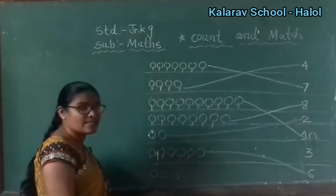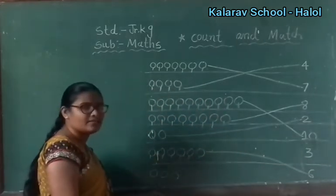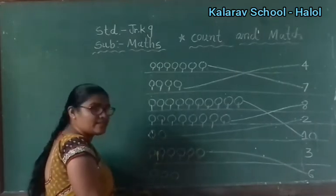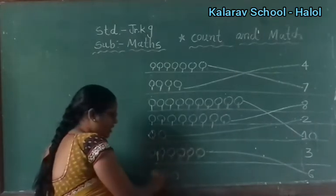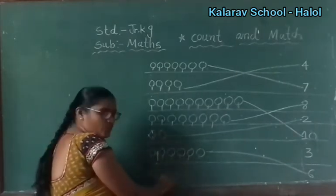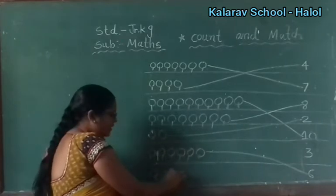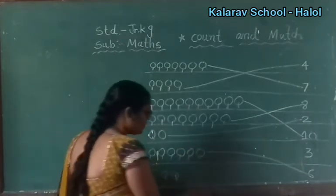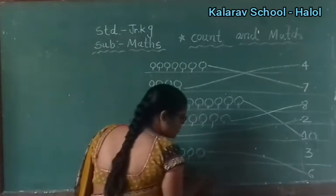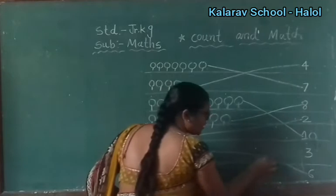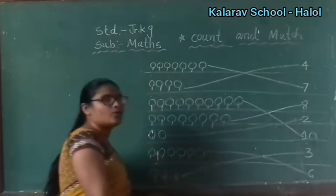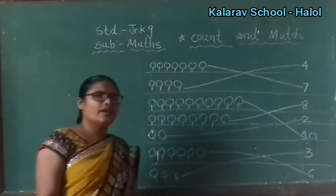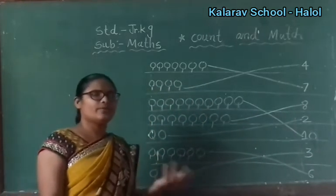Now last one. How many circles? Very easy. So let's count: 1, 2, 3. Find out the number 3. So understood, children — how to count and match. Now I will teach you next.